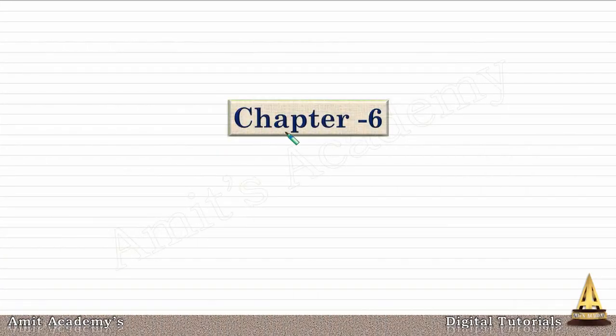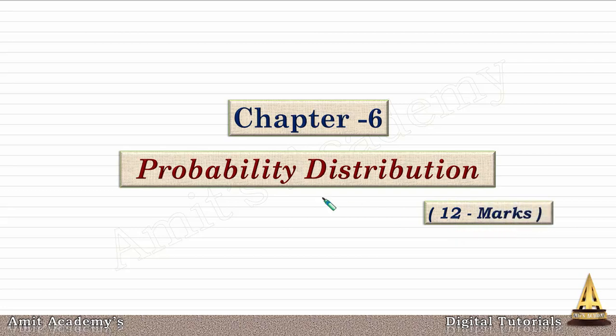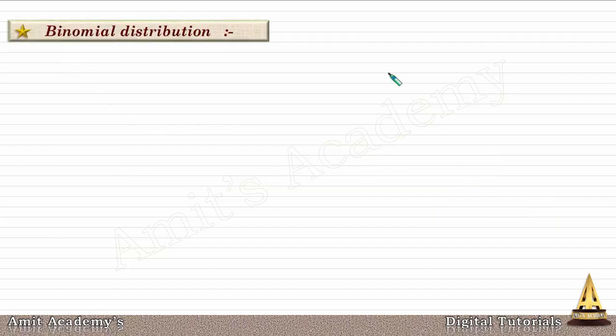The sixth and last chapter of the syllabus is probability distribution, worth 12 marks. In this chapter we will study three types of distributions: first is binomial distribution, second is Poisson's distribution, and third is normal distribution.